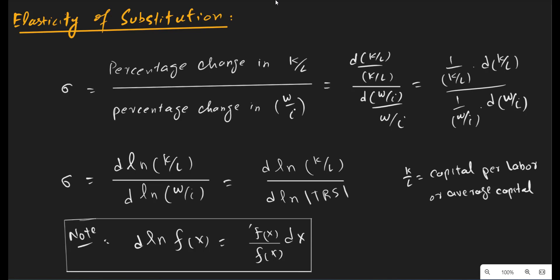The elasticity of substitution measures the change in the K/L ratio — the change in K/L ratio means the use of capital relative to labor in the production process — when prices of either labor or capital change. The percentage change in the K/L ratio is simply divided by the percentage change in the input price ratio to get the elasticity of substitution.